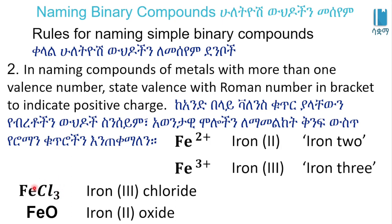FeCl₃ is called Iron(III) chloride. FeO — the iron is Iron(II), so FeO is called Iron(II) oxide.